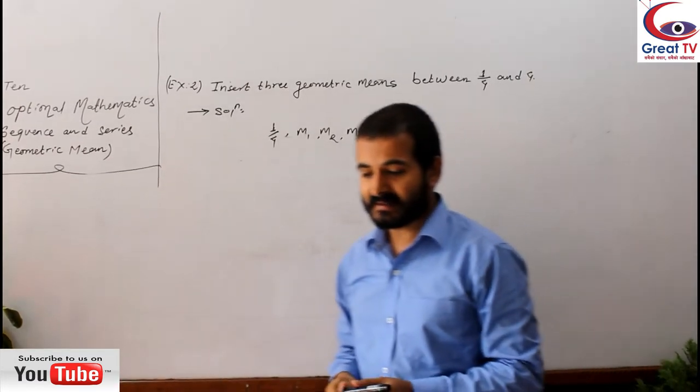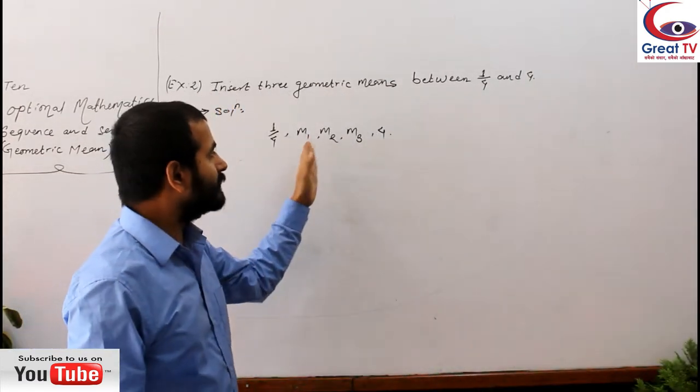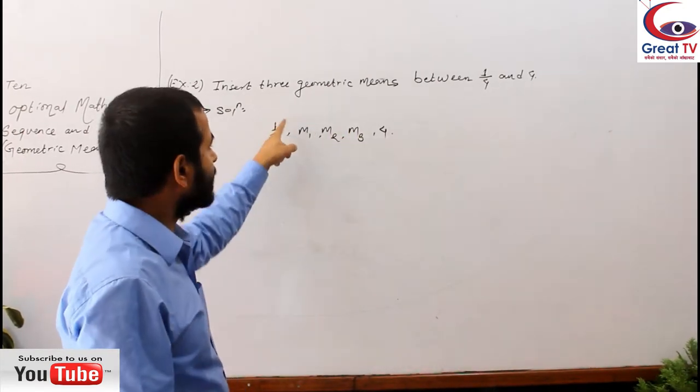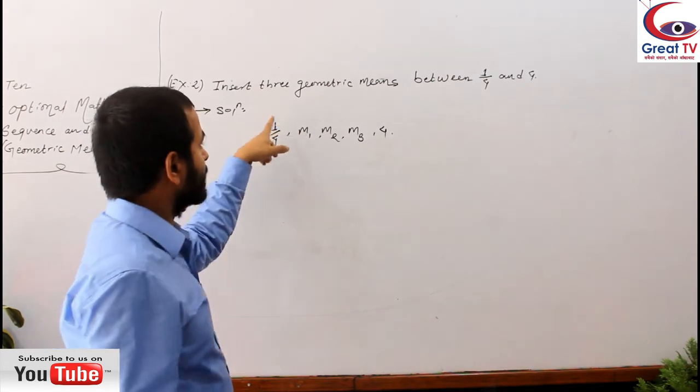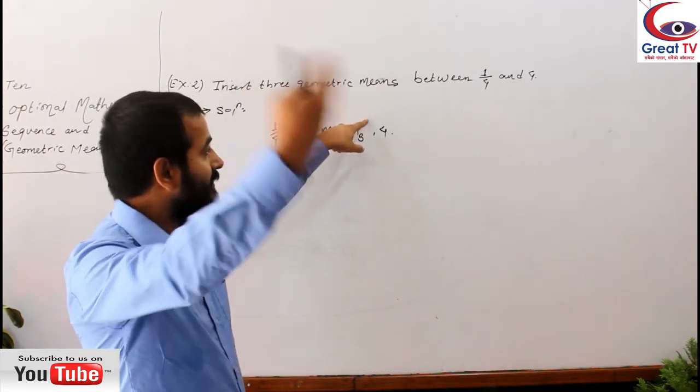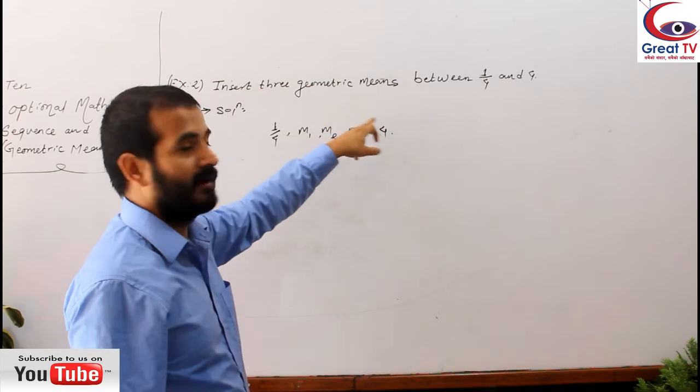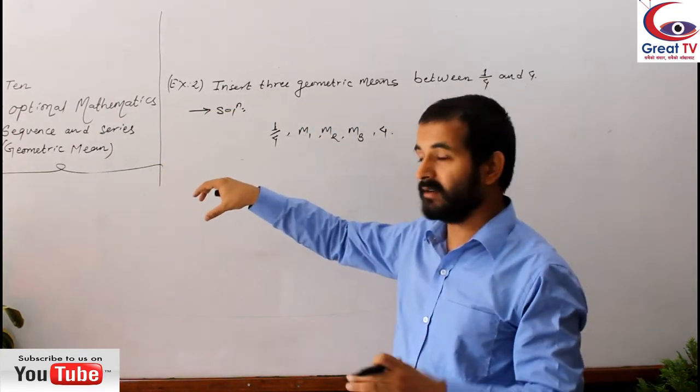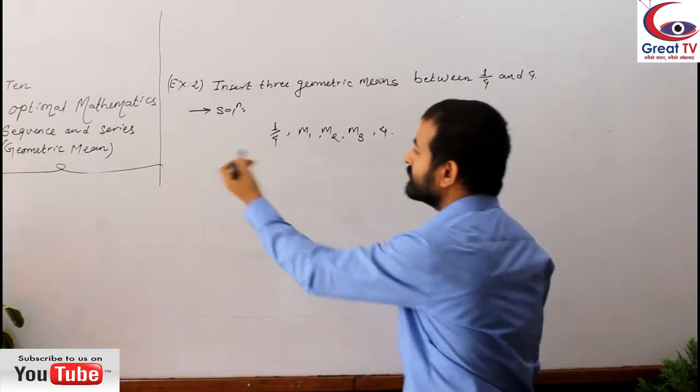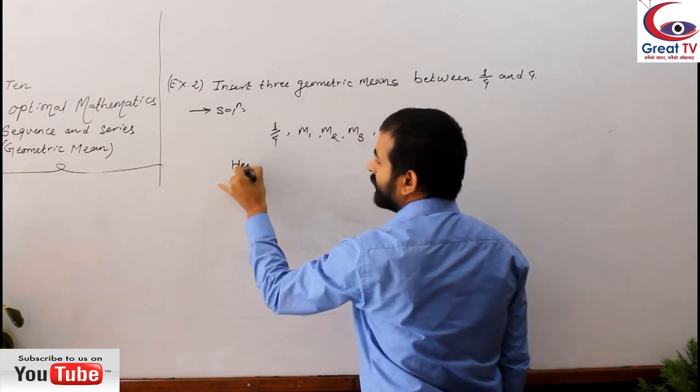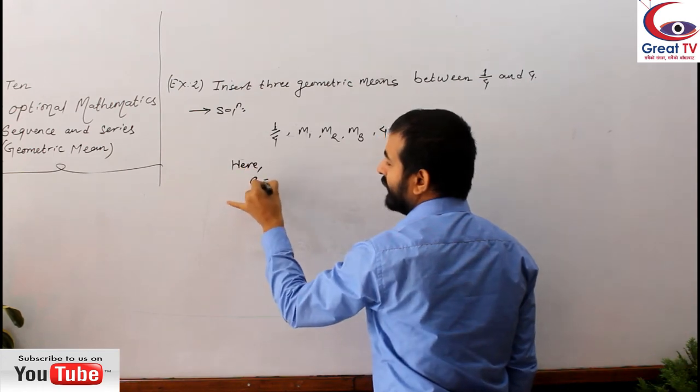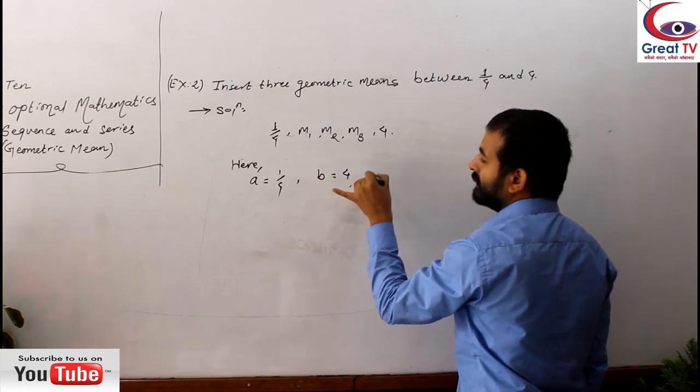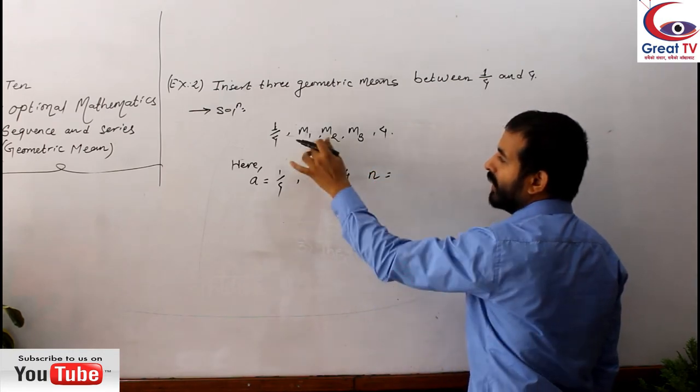We have to insert 3 geometric means. In this case, as I have told you already, to give the geometric means we should know their common ratio - by what number they multiply so that we can get across to the fourth by the constant multiplication of the numbers. The first number A is 1/4, the last number B is 4, and the number of means here equals to 1, 2, 3.